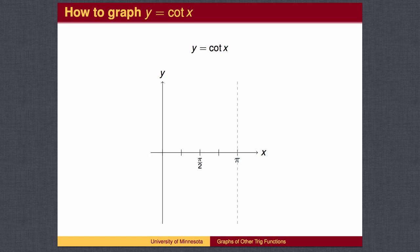At pi over 2, cosine divided by sine is 0 divided by 1, which is 0. At pi over 4, the cotangent is 1, and at 3 pi over 4, the cotangent is negative 1.